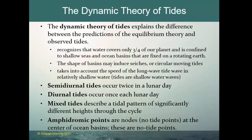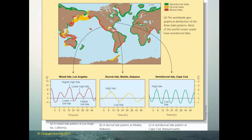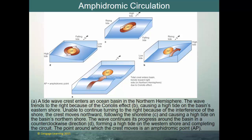Within all basins there is an amphidromic point — also known as a node — which is a no-tide point where the water level does not change. At the center of ocean basins, this is where the water level remains constant. Globally, you can see mixed tides like those at Los Angeles, diurnal tides (one high and one low per day) typical of the Gulf Basin where water sloshes back and forth, and semi-diurnal tides along the east coast and much of the world's coastlines — with two high tides and two low tides in any lunar day.